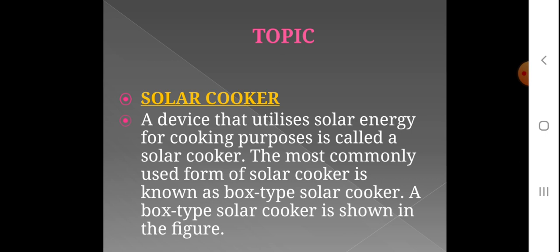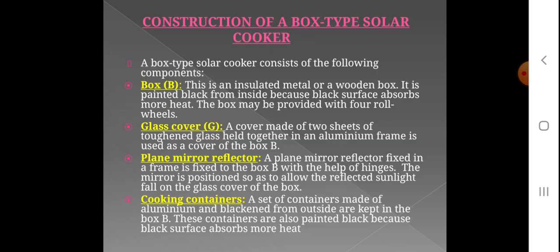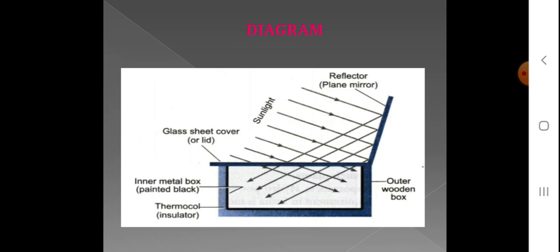The most commonly used form of Solar Cooker is called a Box Type Solar Cooker. In a box type solar cooker, there is a glass sheet, an inner metal box, an outer wooden box, and wood material that is sealed.